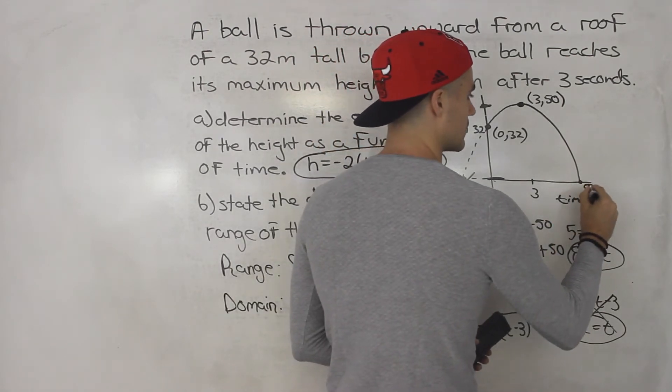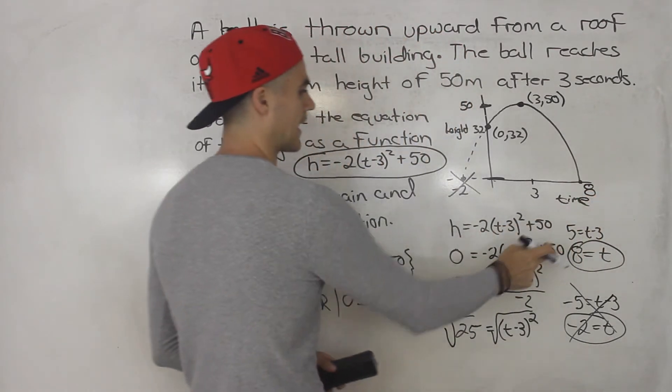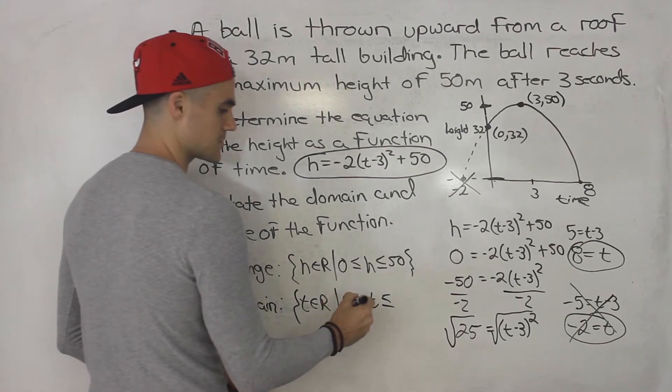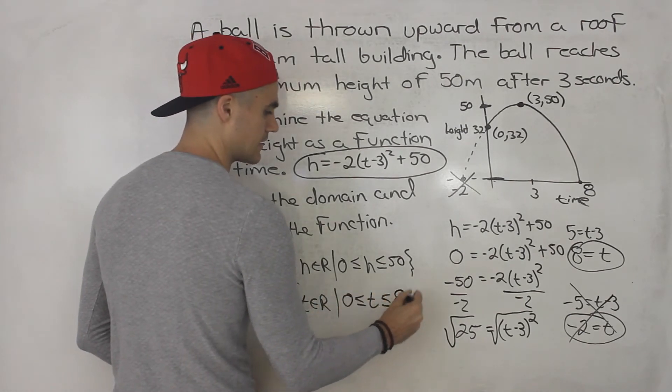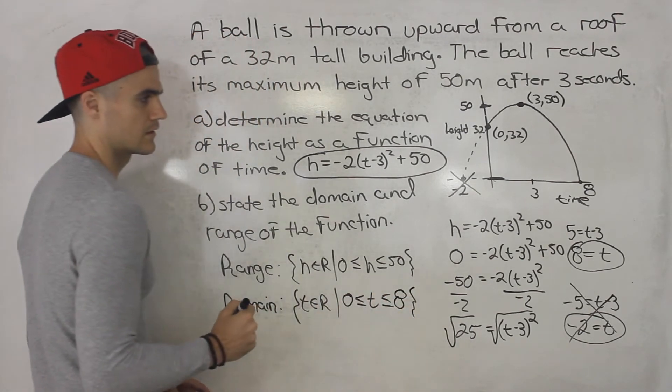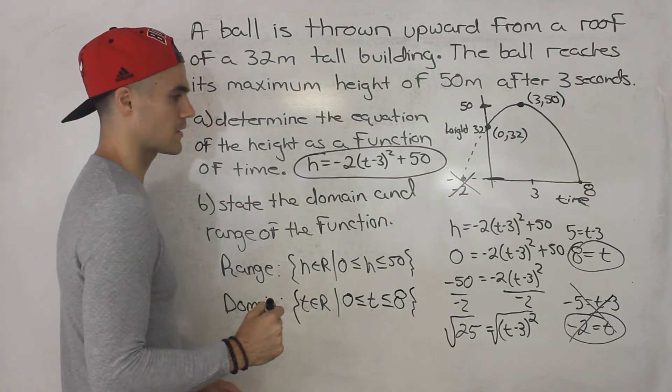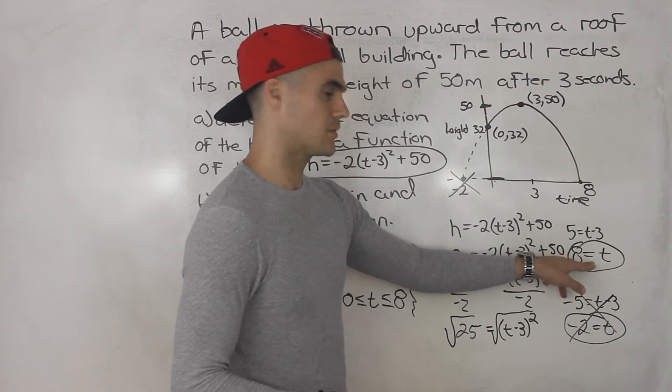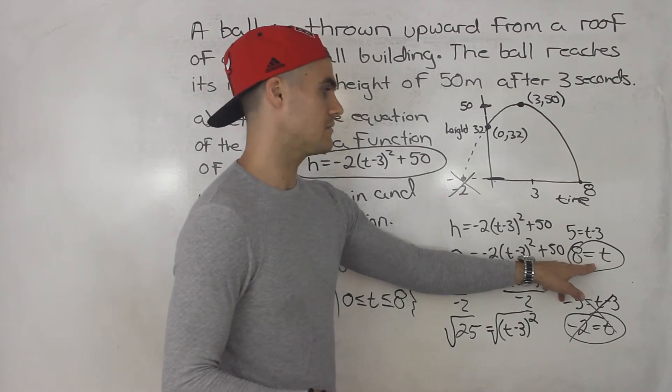So this is the value that we care about. So basically, the ball is hitting the ground at 8 seconds. So we know the domain, the time is between 0 and 8. That's how you solve for that domain. Notice in this case, too, that it's a nice number. It's a nice whole number, 8.